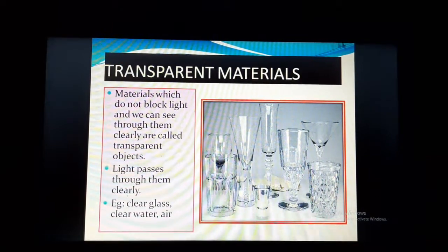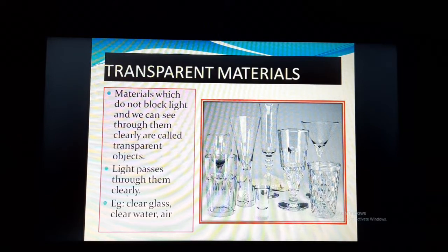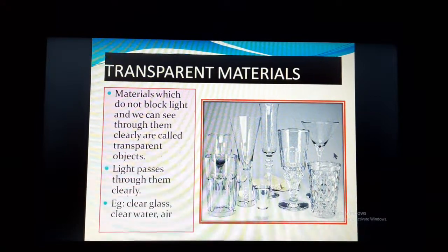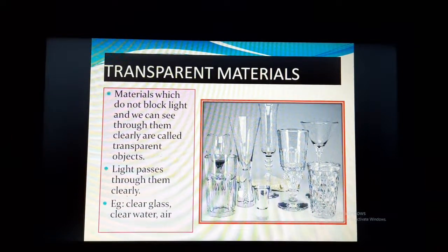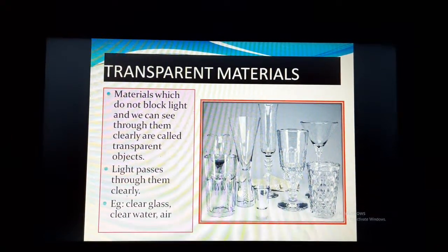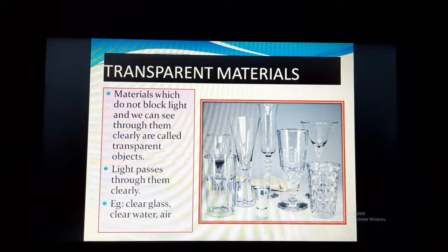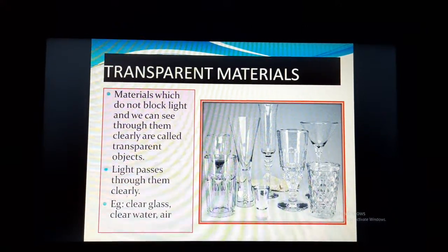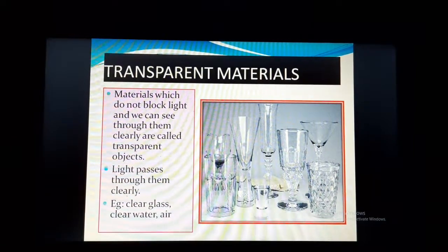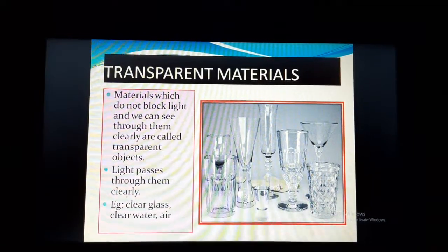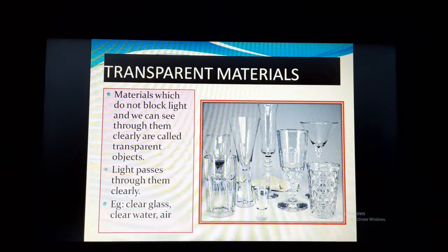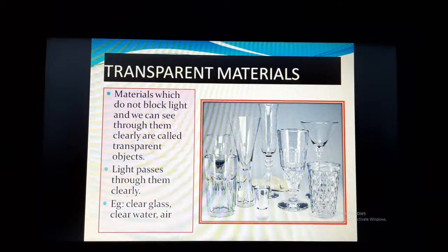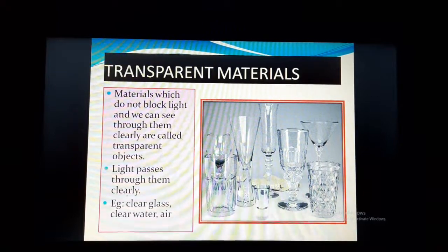These are some examples of transparent materials. They are all made up of clear glass, and we can easily see through them. There are other examples also — clear water: if the water is clear, we can easily see through it. And air: air is always present around us but we cannot see it. Why? Because air is transparent. So air is everywhere but we cannot see it because it is transparent.